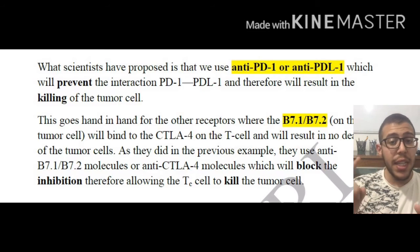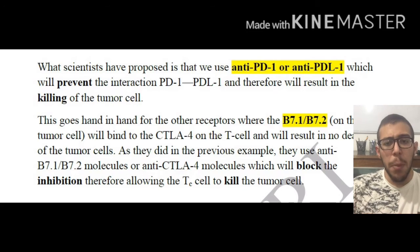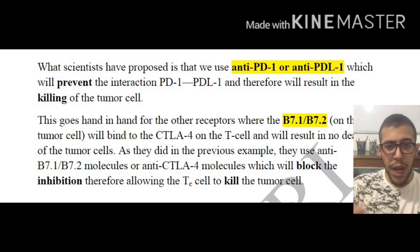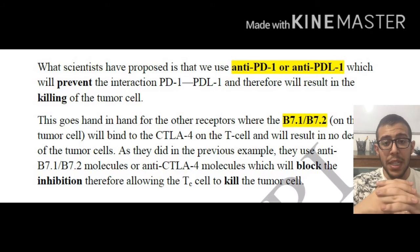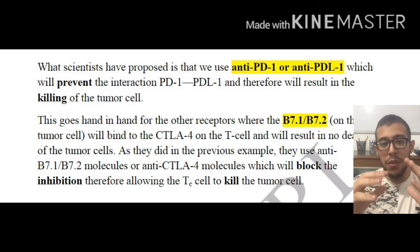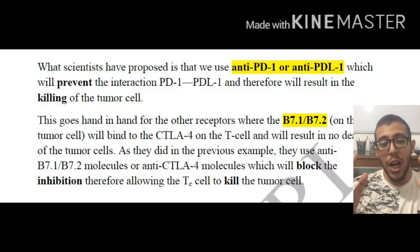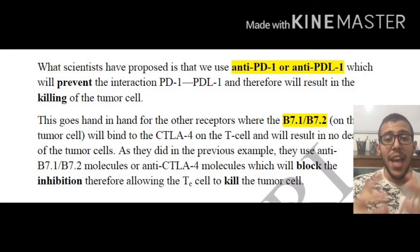We are blocking the PDL1 and PD1 interaction, and we are blocking the B7.1/B7.2 and CTLA4 interactions. When these are stimulated and bound, they lead to no killing; but when they are blocked, the T cells are going to be killing the tumor cells.